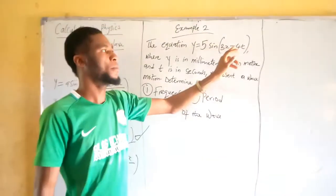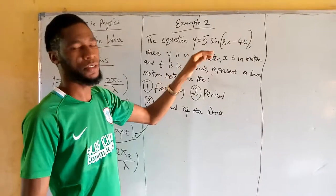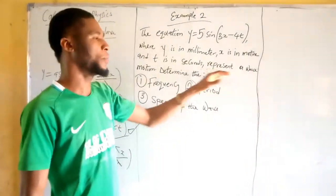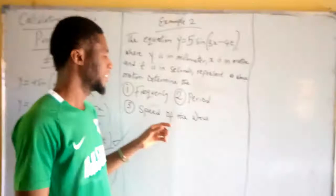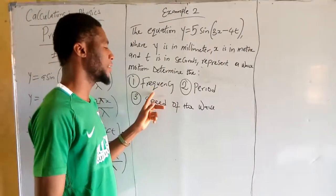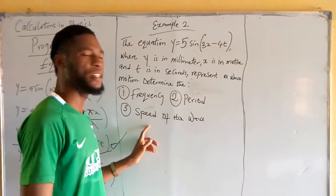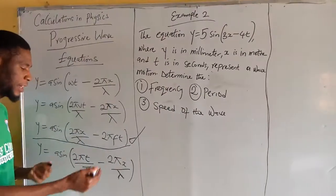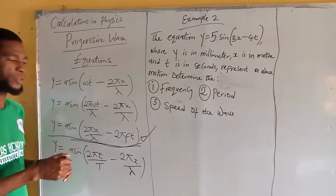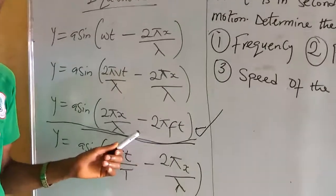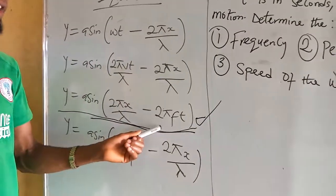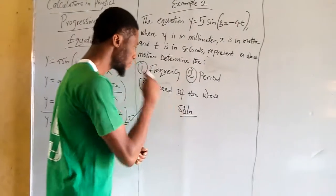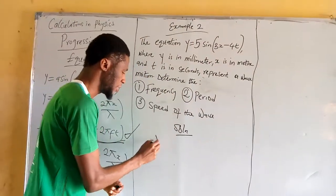Example two: the equation is y = 5 sin(3x − 4t), where y is in millimeters, x is in meters, and t is in seconds. This represents wave motion. The question asks us to determine the frequency, the period, and the speed of the wave. I will be using my favorite equation to solve this.